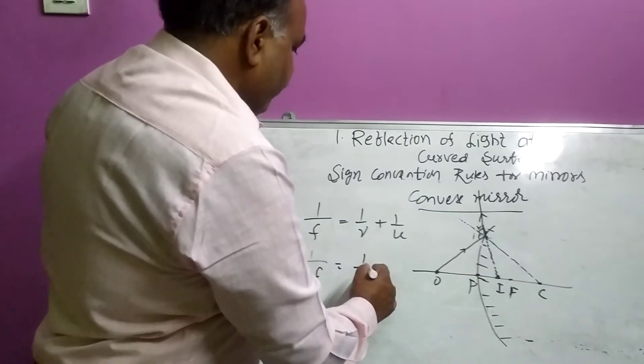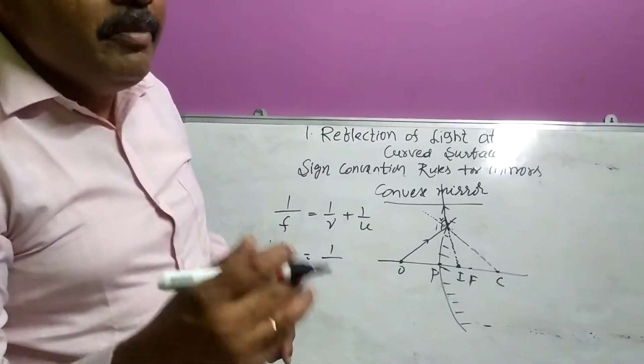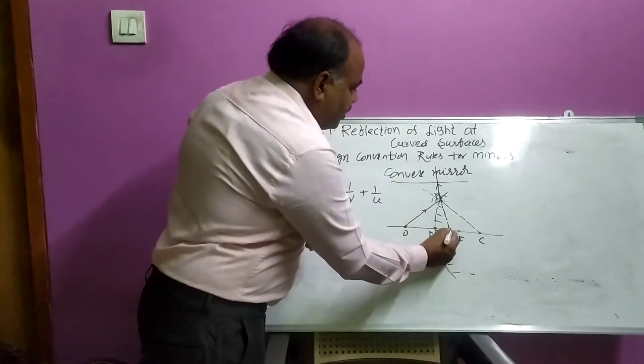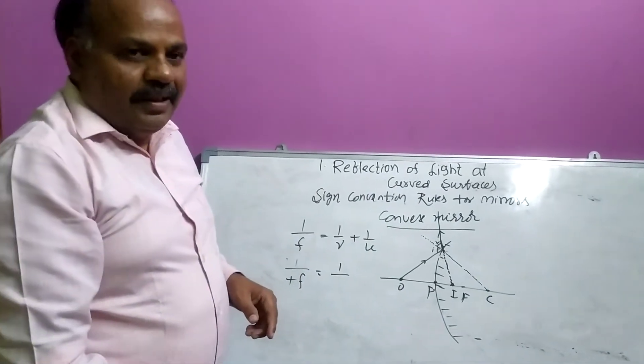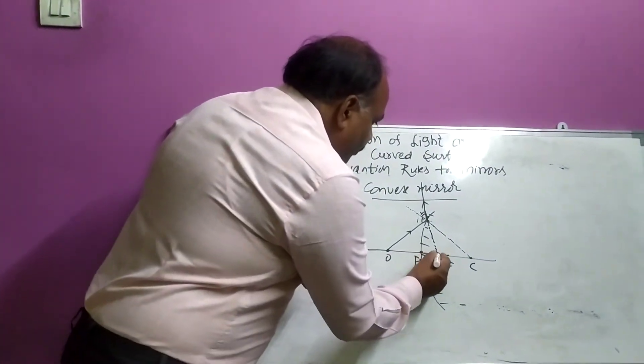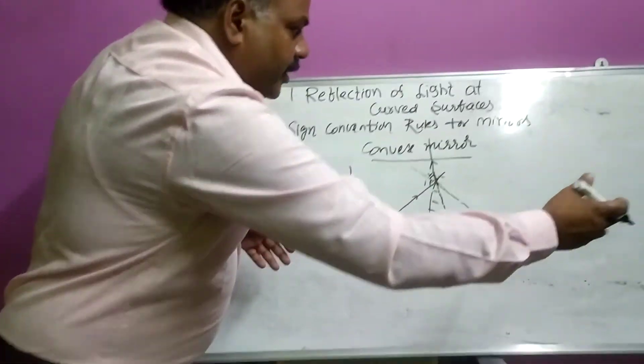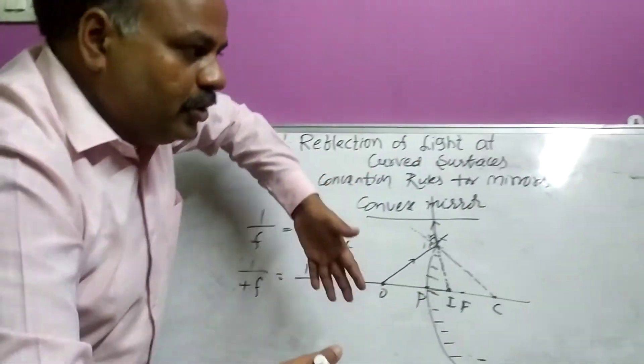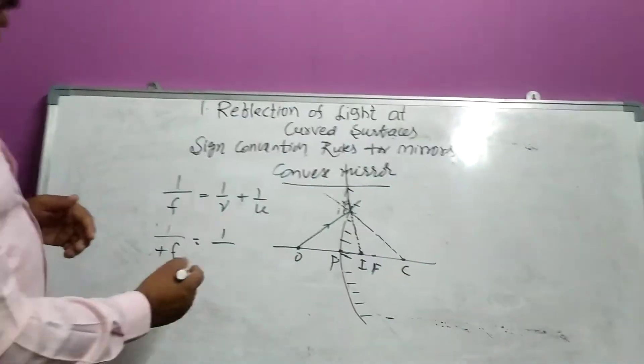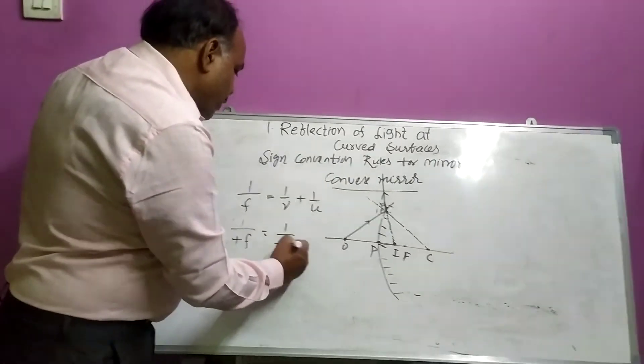Next, 1/V. V means we know image distance. Where is image? Here it is image. From pole, right side. And incident ray is also in this direction. Both are in same direction. That's why it is taken as plus.